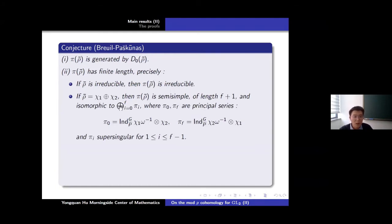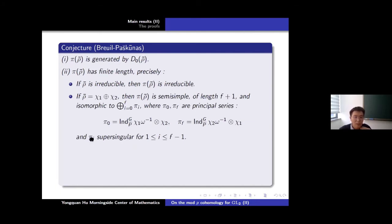It is isomorphic to a direct sum of f+1 representations, where π_0 and π_f are principal series, explicitly determined by the two characters. If you take f=1, this representation is exactly isomorphic to the direct sum of π_0 and π_f — these are the two principal series. But if f is bigger than 1, you will get other representations which are conjecturally supersingular.